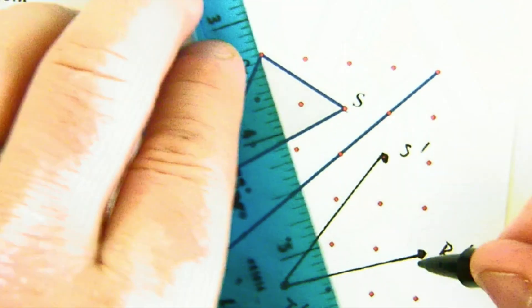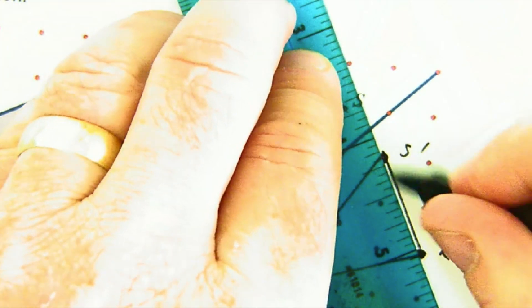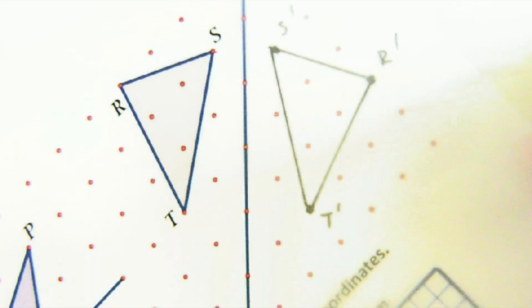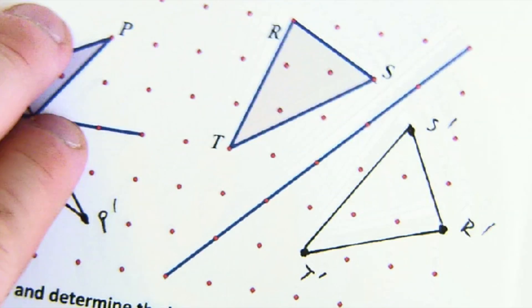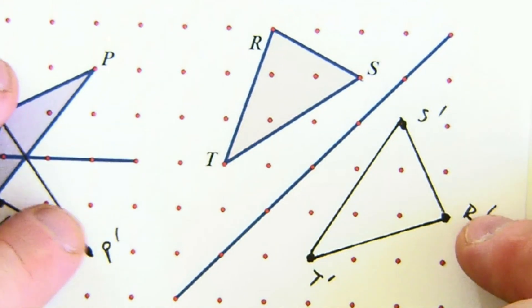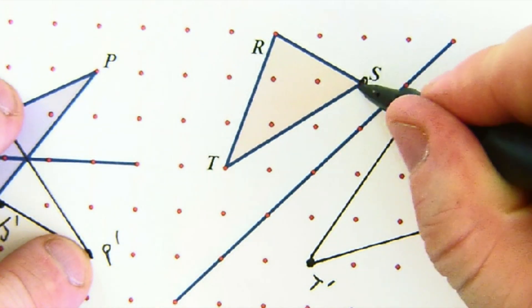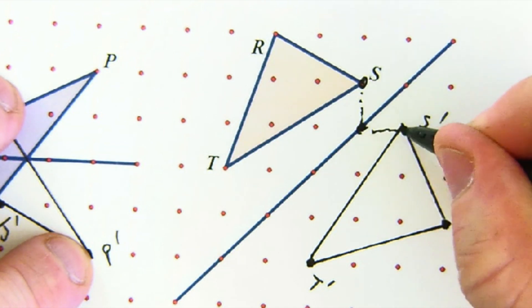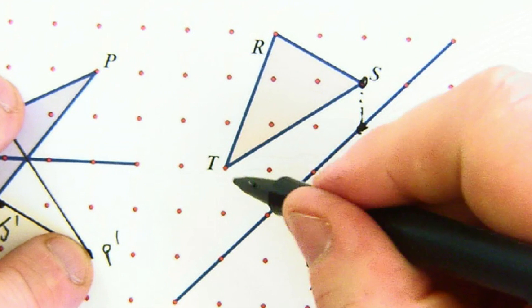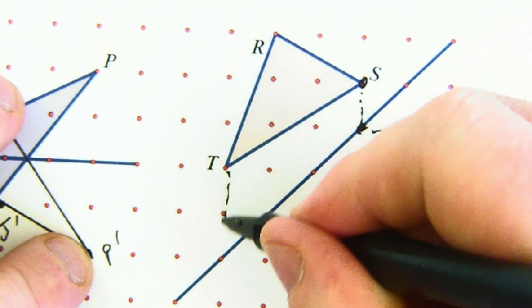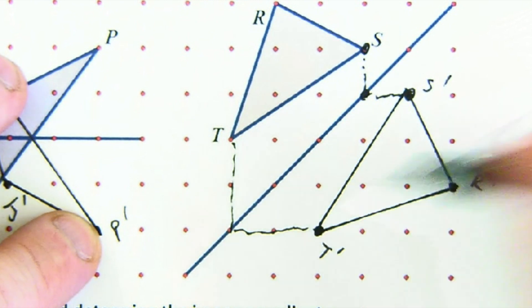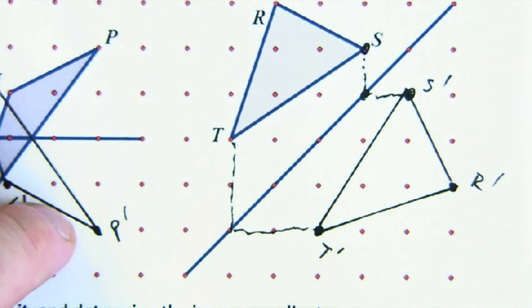If you didn't like that technique, you can of course use patty paper and make it work as well. Another thing that I actually do more than that first technique is I just count out to the line. So I go down and I'm one away, so I'm going to go one away to get to S. If I'm going to T, I go down two to get to the line, and I'm going to go 90 degrees over to find T prime.